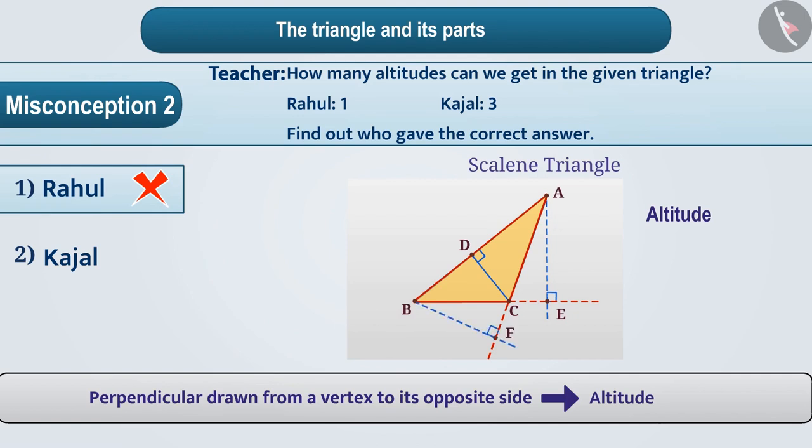In this way, we can draw three altitudes in any triangle. Hence, the understanding of Kajal is correct, that is option 2 is the correct answer.